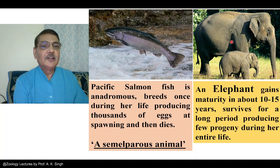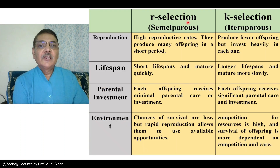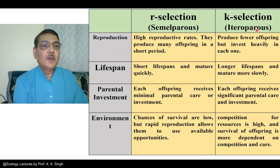That is why R selection and K selection are kinds of reproductive strategies. In the case of R selection, semelparous organisms show high reproductive rates — they produce many offspring during their short span of life. Whereas iteroparous organisms are those which produce just a few offspring but invest heavily for each one, investing a lot of their energy for each progeny.